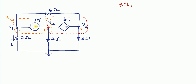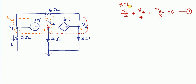Applying KCL: current leaving through the 2 ohm resistance is V1/2. The 6 ohm resistance is common to both super nodes, so we don't need to write the current through it. One current is leaving through another 2 ohm resistance, another current is leaving through the 4 ohm resistance as V2/4, and current leaving through the 3 ohm resistance is V3/3. Setting the sum equal to zero gives the first equation.